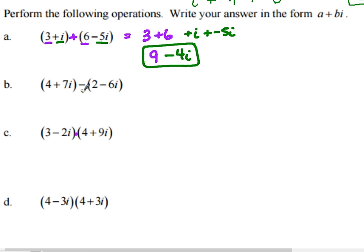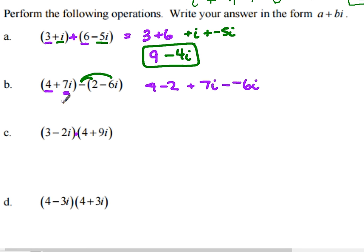For subtraction, we must subtract both parts. We have 4 minus 2 for the real parts and 7i minus negative 6i for the imaginary parts. Minus a negative becomes plus, so 7i plus 6i equals 13i. The result is 2 plus 13i.